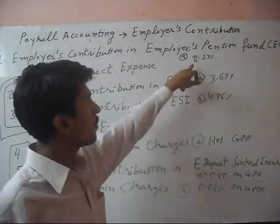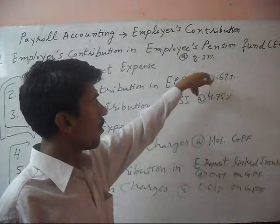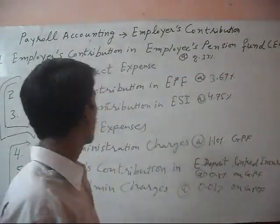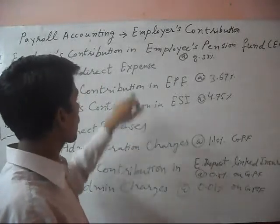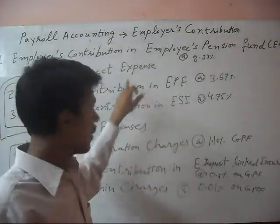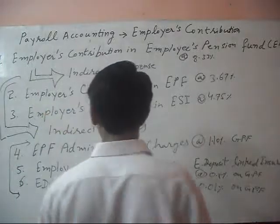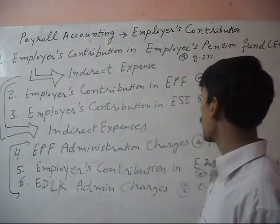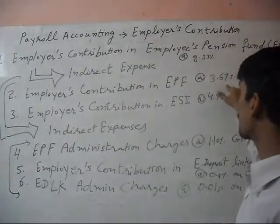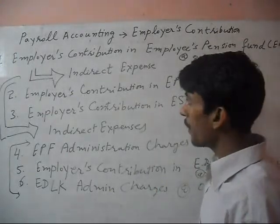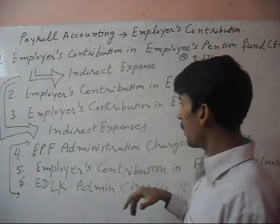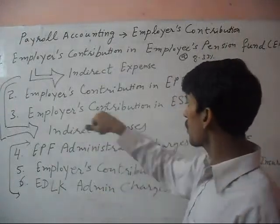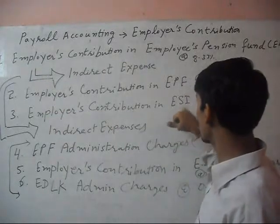This is 8.33% of the basic pay of the employee, and this is an indirect expense. The second is employer's contribution in the employee's pension fund at 3.67% of basic pay. This is also an indirect expense. The third is employer's contribution in employee's ESIC (paid issuance), which is 4.75% of basic pay.